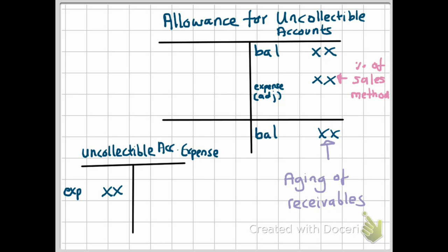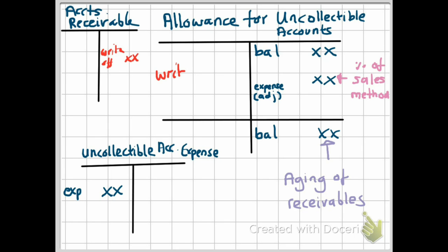Now let's look at when there's an actual write-off. A write-off is where a company decides they will never be able to collect an amount from a customer. Under the allowance method, you debit the allowance for uncollectible accounts for the amount of the write-off and credit accounts receivable. In your allowance account you will have a beginning balance, credits for the expense estimate, debits for write-offs, and then the ending balance. The write-off is the only possible debit to your allowance for uncollectible accounts.